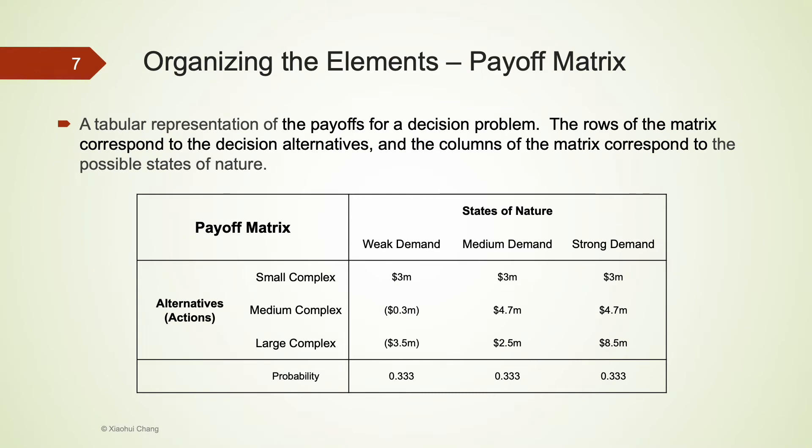Let's see how we can better organize these four elements and summarize the information to facilitate our decision-making process. Payoff matrix presents the relationship between alternatives and states of nature.